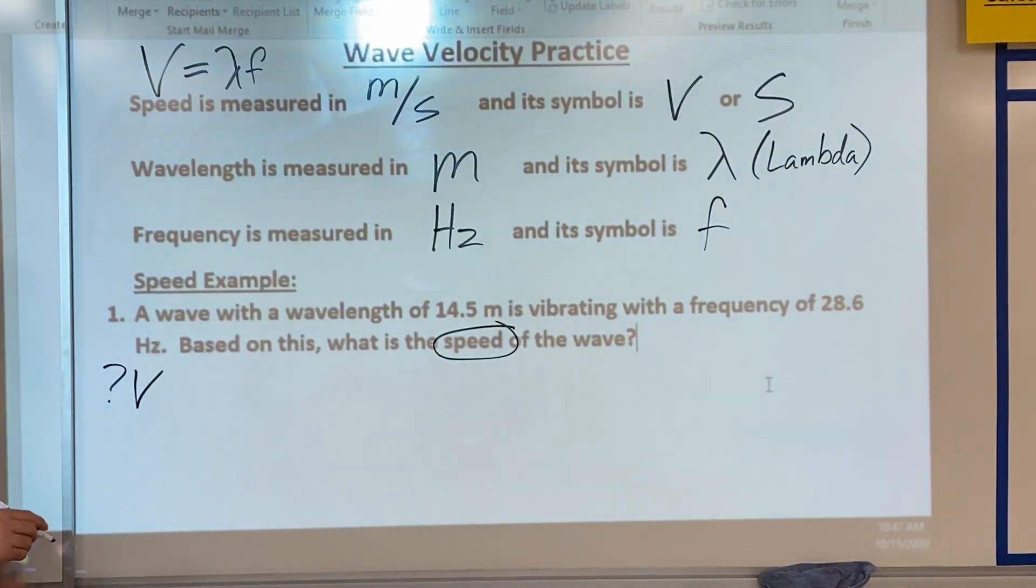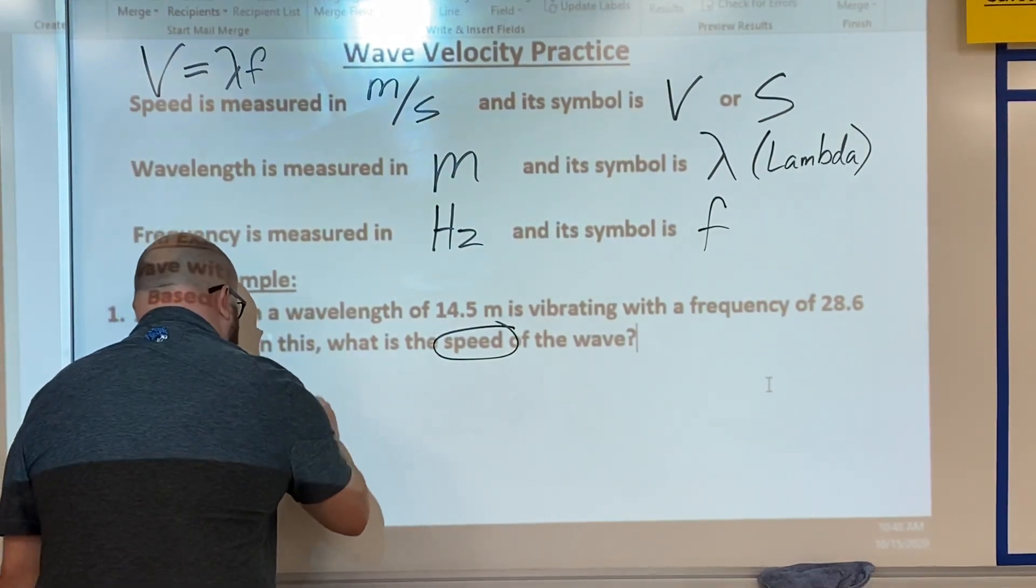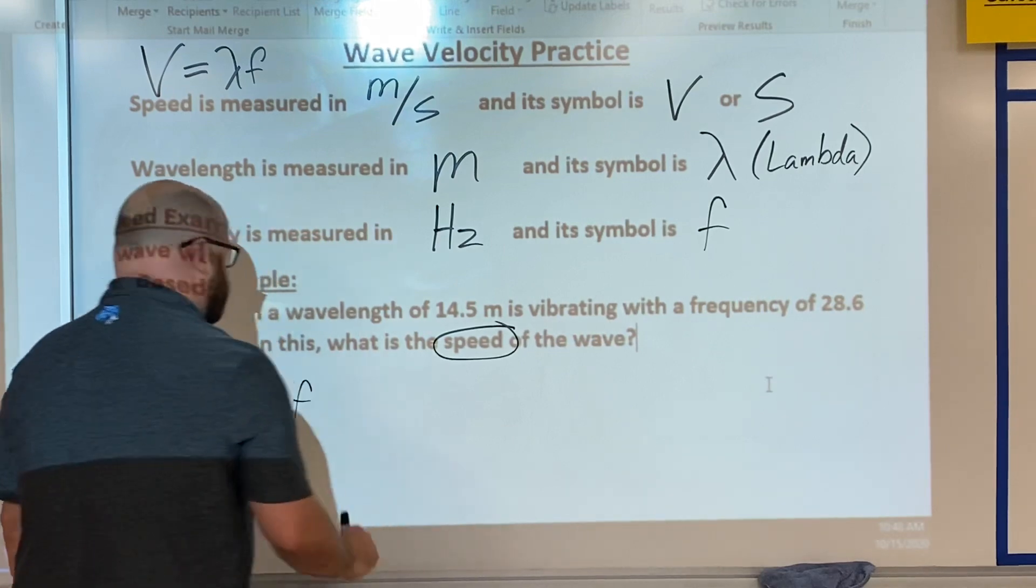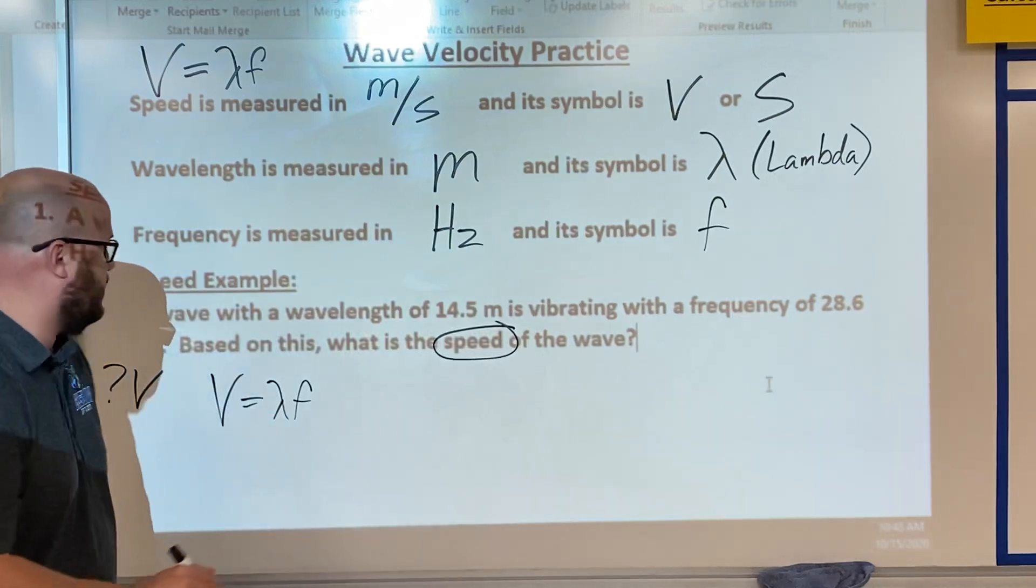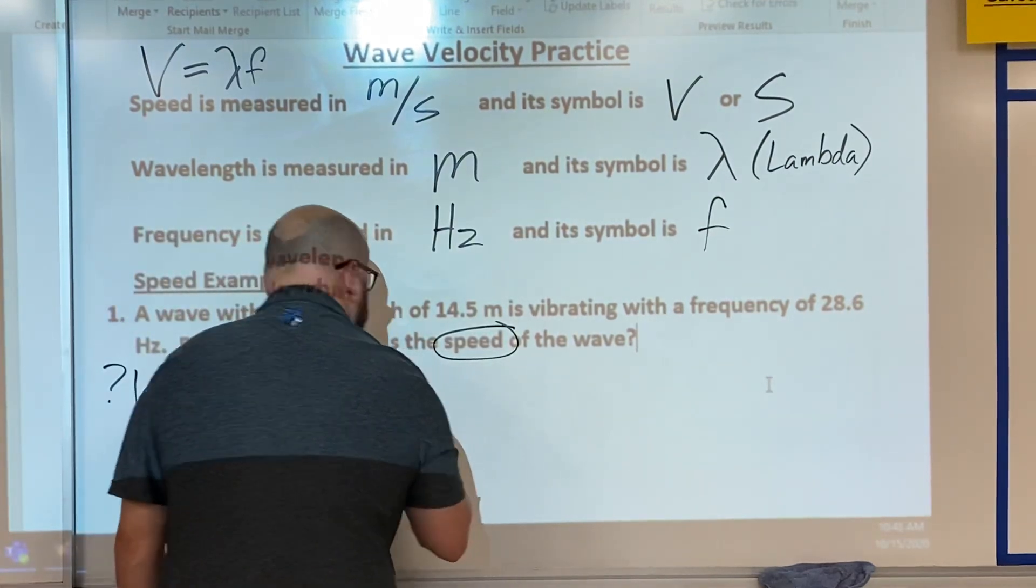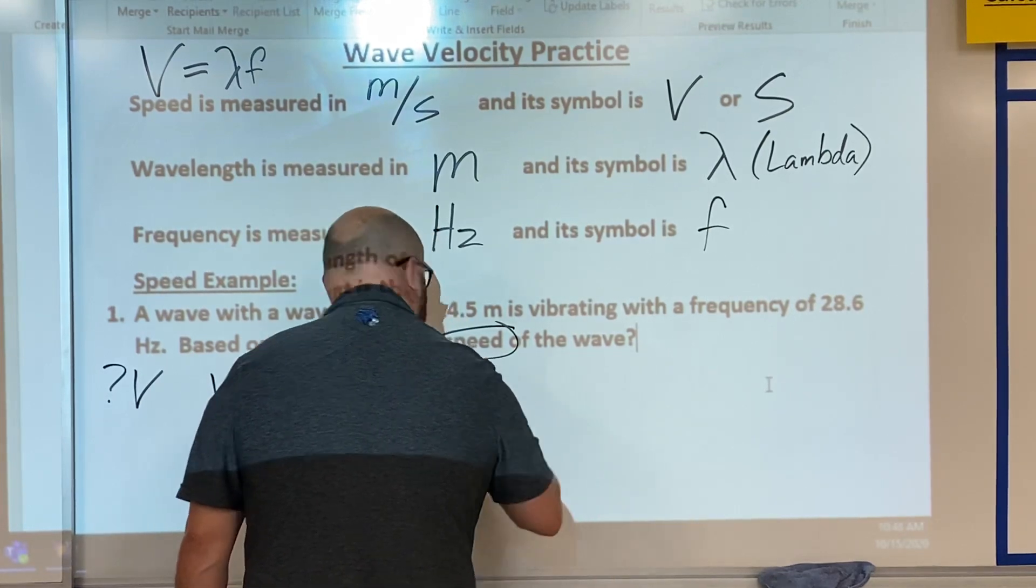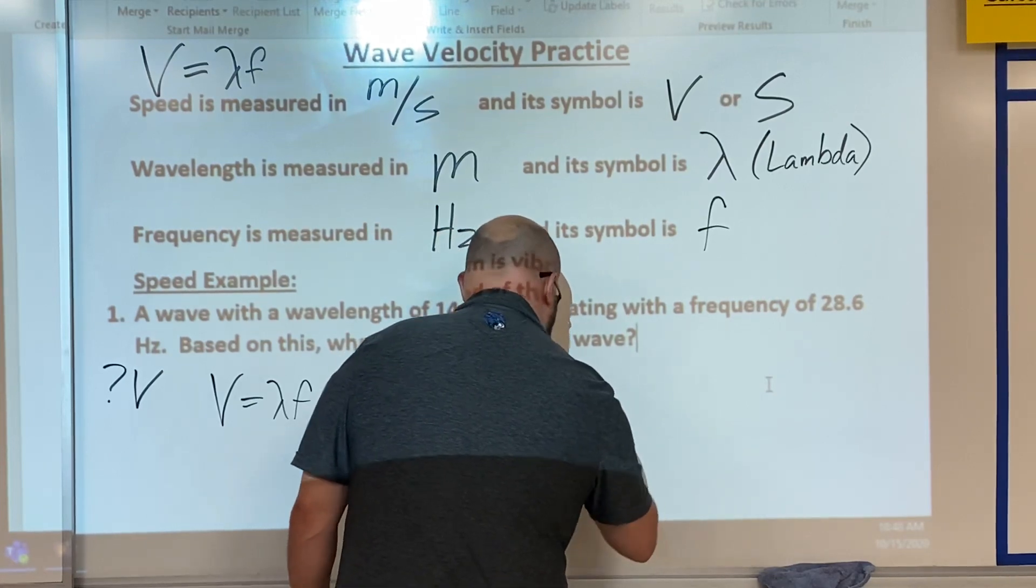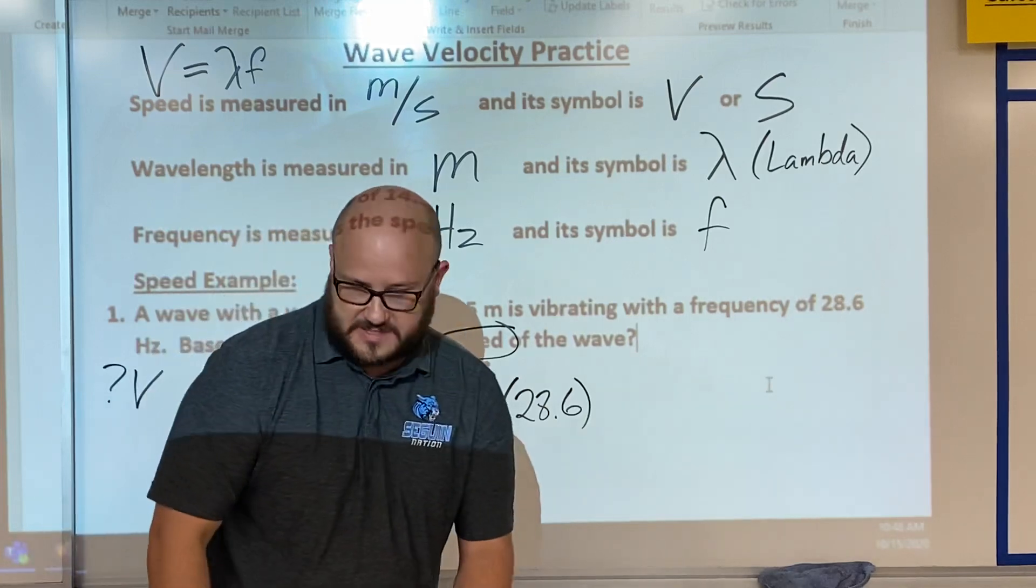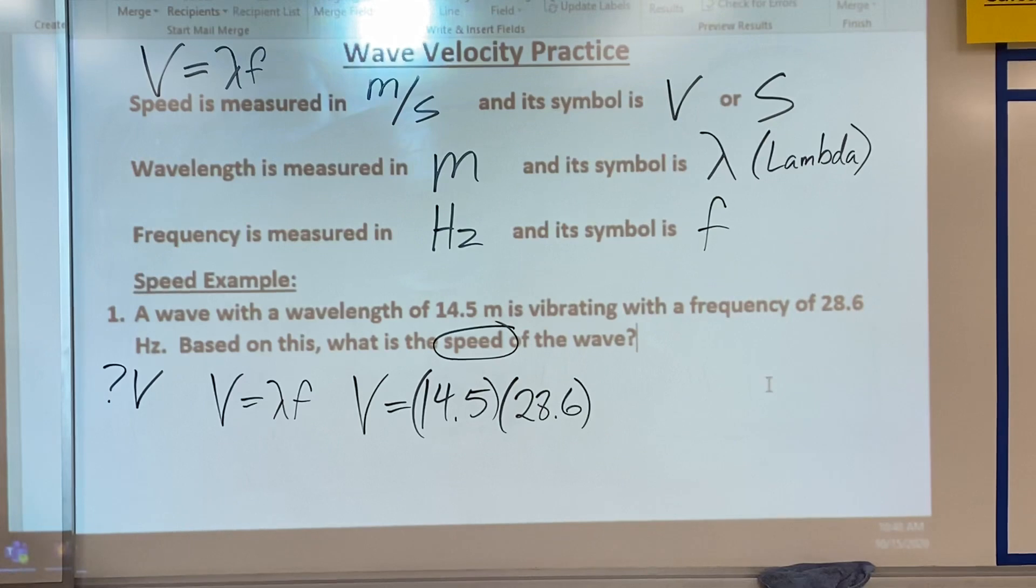So first thing to do, find out what you're looking for. In this case, what's the speed? So I'm going to put question mark speed over here. Pull up your equation V equals lambda frequency. We're giving both of those, we're giving lambda here and frequency there. So V equals 14.5 times 28.6, and this is where you need the calculator.